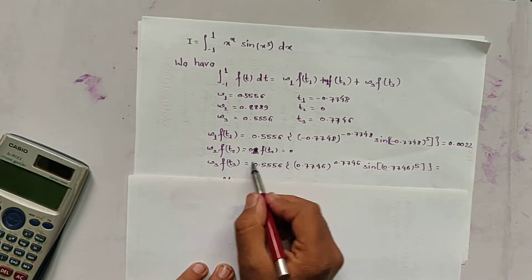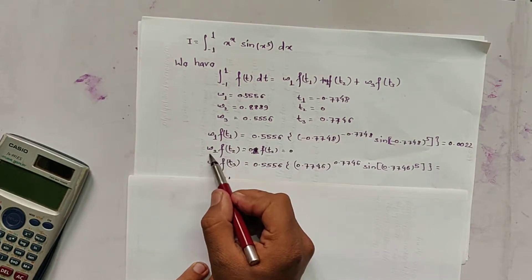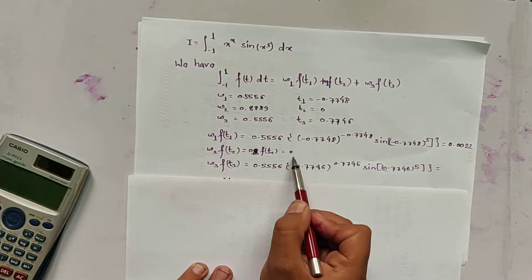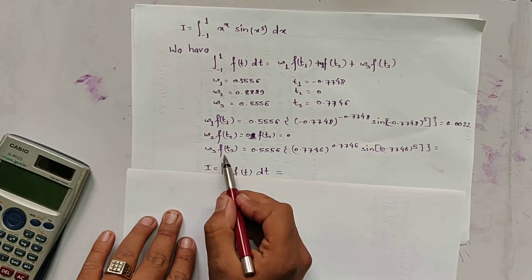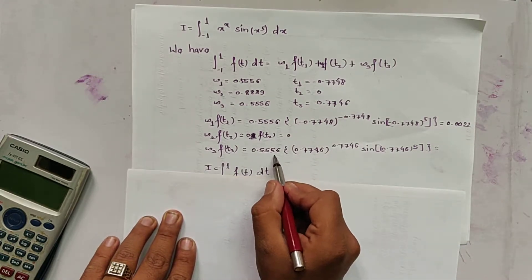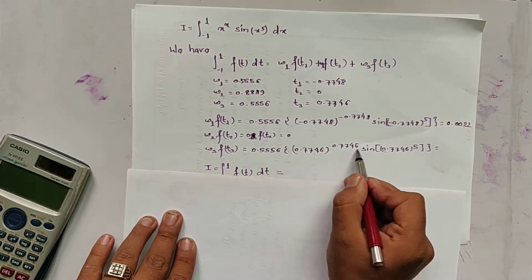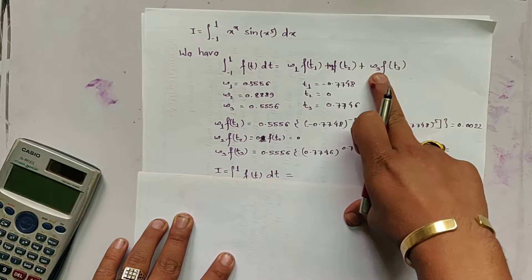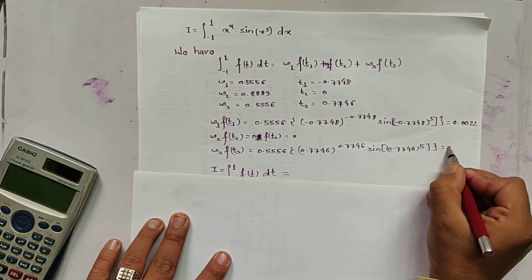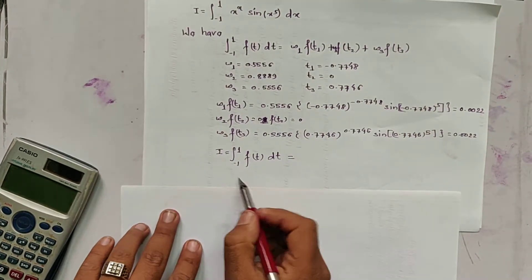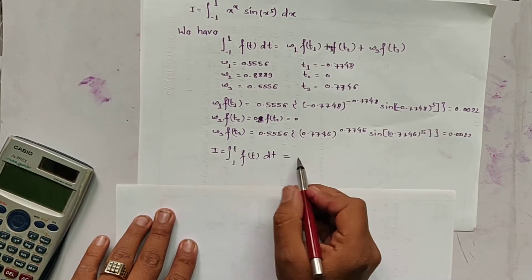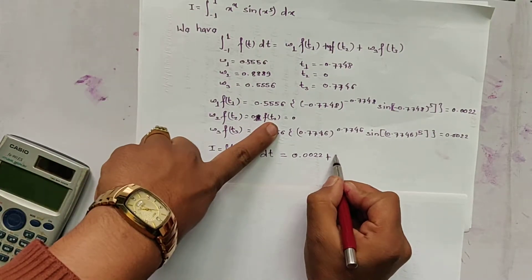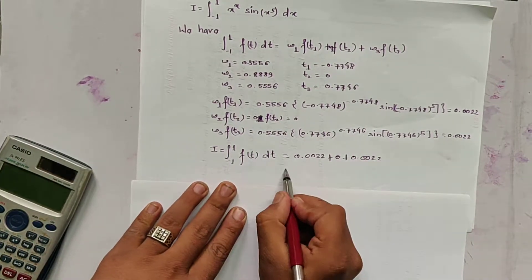For w2*f(t2): since t2 = 0, f(t2) also becomes 0, so w2*f(t2) = 0. For w3*f(t3): substituting w3 = 0.5556 and t3 = 0.7746, we get 0.5556 * (0.7746)^(0.7746) * sin((0.7746)^5), which also gives 0.0022.